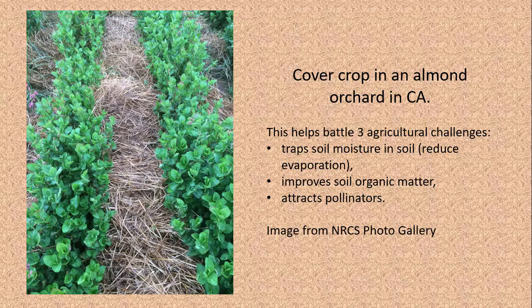Cover crops are also a popular way to reduce erosion. In this case there's a cover crop and also a mulch layer on the soil, and both of these are helping to prevent erosion. This cover crop and mulch layer also helps to trap soil moisture, which helps to prevent or reduce evaporation of water from the soil. It improves soil organic matter — this organic matter is going to decompose and be added back into the soil, improving the amount of carbon and also other nutrients.